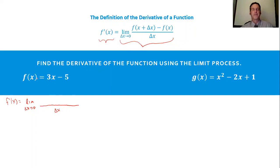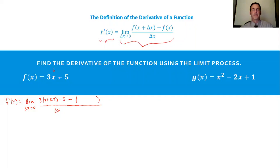What does that mean? Well, it means your f of x here, which is 3x minus 5 — you're going to have this x replaced with this new input, which is x plus delta x. So you get 3 times (x plus delta x) minus 5. And then a subtraction sign appears next, followed by the original function, that 3x minus 5.